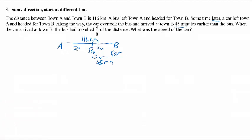We know that 8 units represent 116 km. To find 3 units, we take 116 divided by 8, times 3, and the 3 units will represent 43.5 km. The distance from here to here is 43.5 km, and we know that to travel this 43.5 km, the bus needs another 45 minutes.